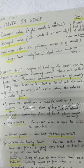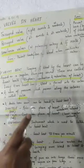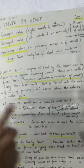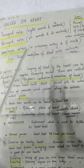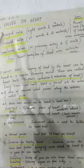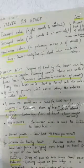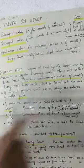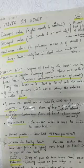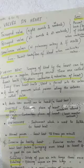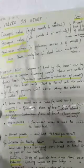The Tricuspid valve is located between the right auricle and right ventricle. Once the blood reaches the right ventricle, it cannot flow back to the right auricle because of the closure of the Tricuspid valve. The Bicuspid valve is located between the left auricle and left ventricle. Once the blood reaches the left ventricle, backflow into the left auricle is prevented by the closure of the Bicuspid valve.